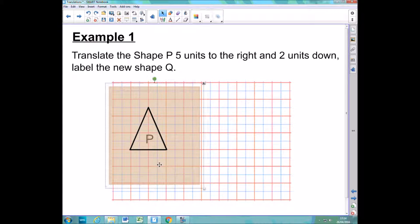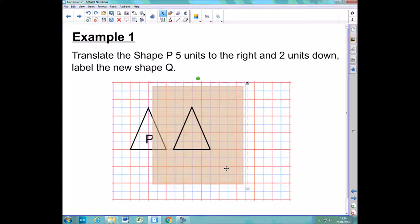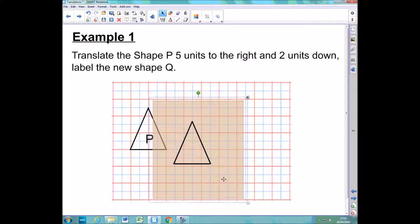So now what I'm going to do is shift this five units to the right. That is one, two, three, four, five. And then I'm going to move it two units down. One, two.